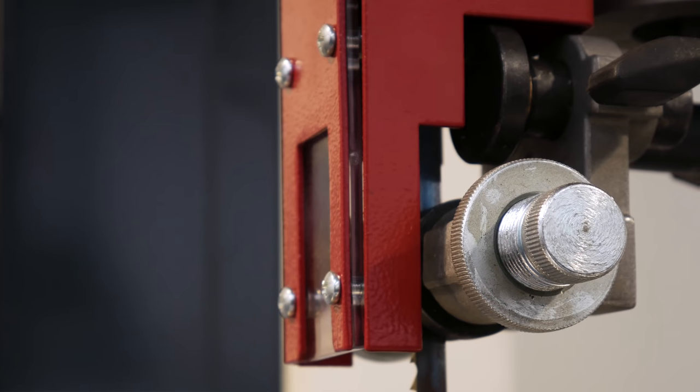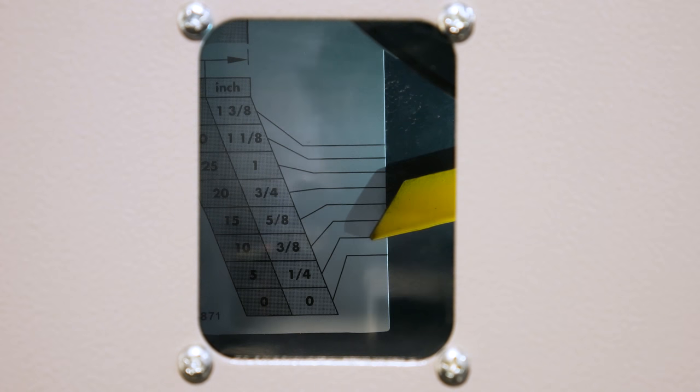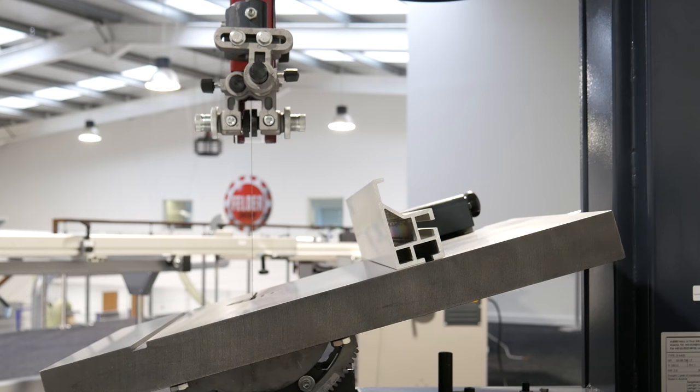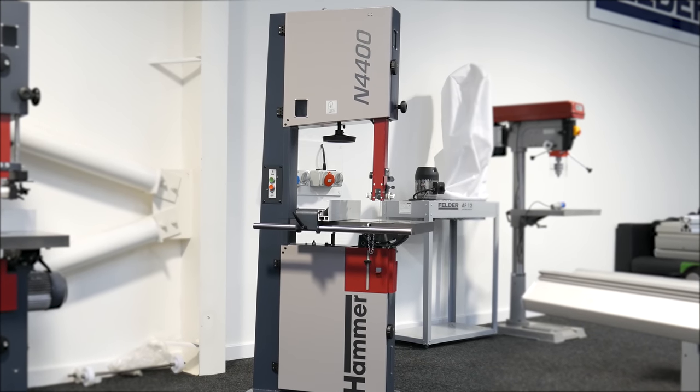Standard features include saw blade guides above and below the table, saw blade tension indicator, tilting machine table and many others to make a comprehensive package at a great price.